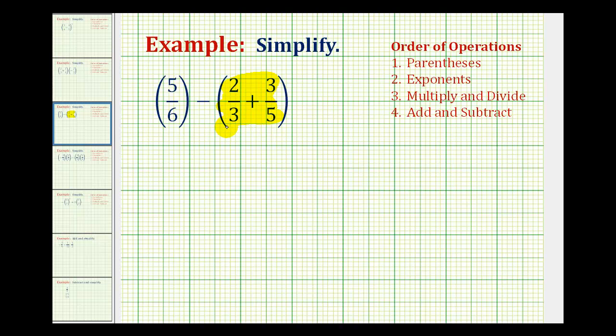Fifteen is the smallest number that is divisible by both three and five, and it's also the least common multiple of three and five. So we're going to rewrite both of these fractions with denominators of 15.